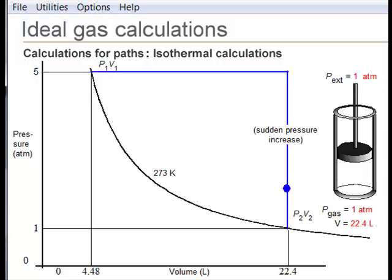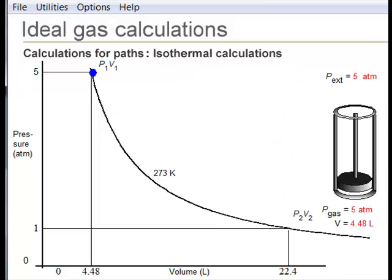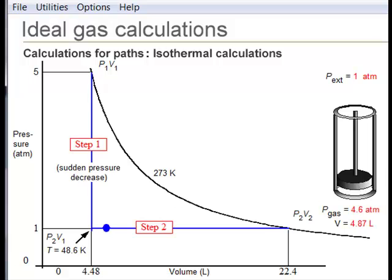Another irreversible path is to suddenly let the external pressure jump to 5 atm. The gas then compresses as it catches up. Watch the piston pressure and compare with the path followed.